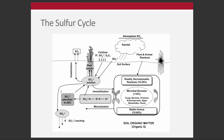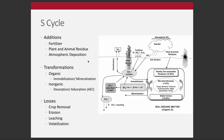Here's the sulfur cycle. The vast majority of sulfur is in the organic fraction. Inputs include fertilizer, rainfall, and residues. Transformations include mineralization and immobilization — similar to the nitrogen cycle — and adsorption to the anion exchange capacity. Losses include leaching and volatilization. Compared to the nitrogen cycle, it's less complex, but there are parallels in terms of the mechanisms: additions, transformations, and losses.